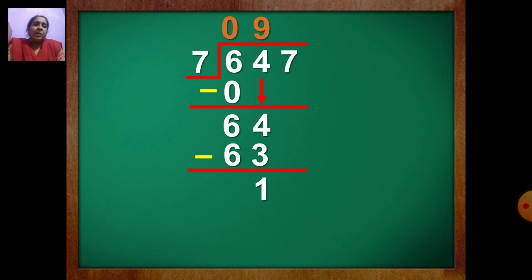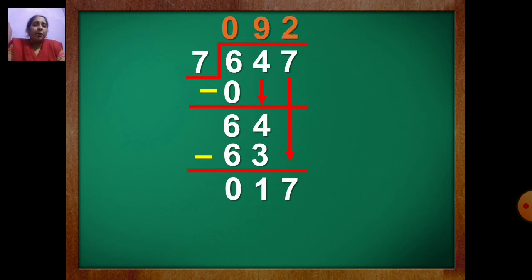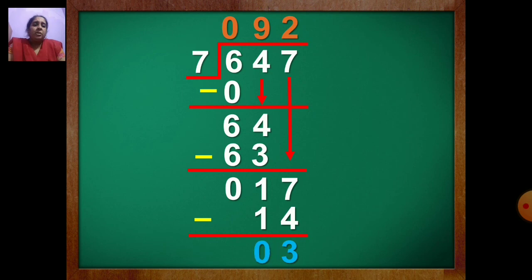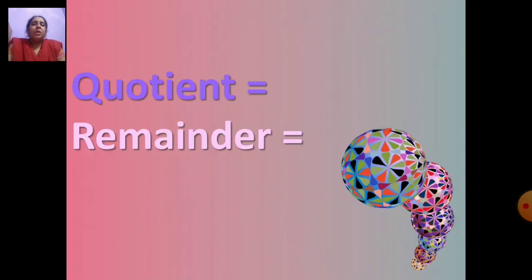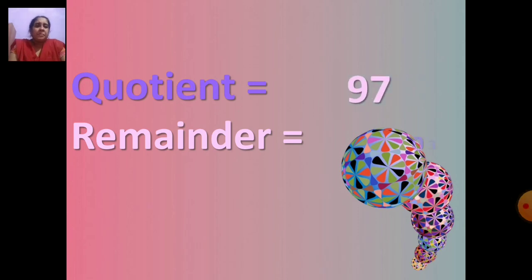Now bring 7 down — you have 17. Again take from table of 7, a number less than 17. Which number will you take? 7 twos are 14. Write 2 up, 14 down. Draw the line, put the sign of minus. 7 minus 4 is 3, and 1 minus 1 is 0. Now what is the quotient? The quotient is 97 and the remainder is 3.